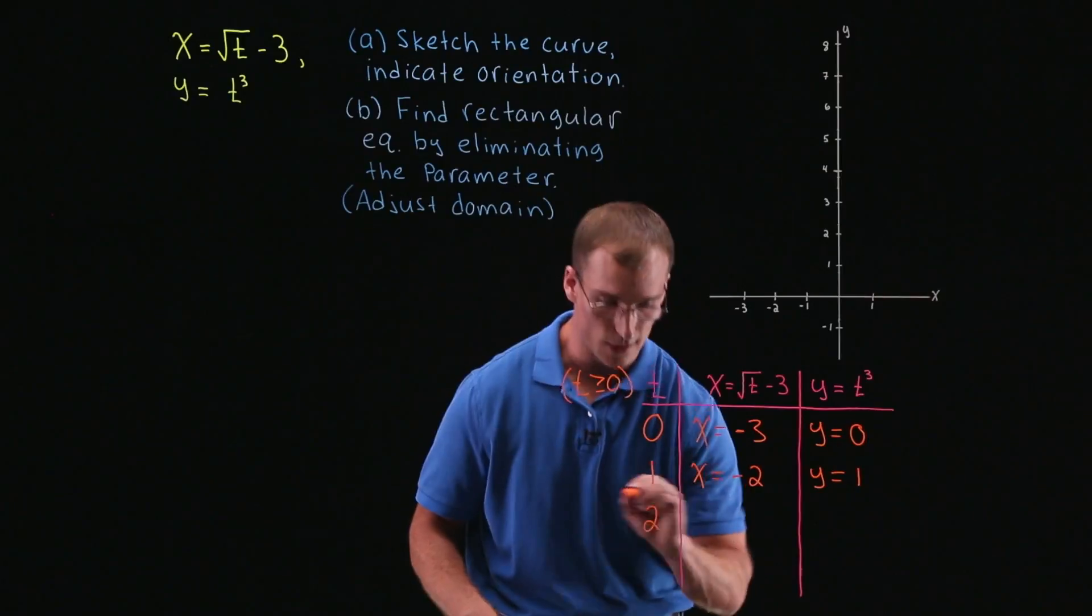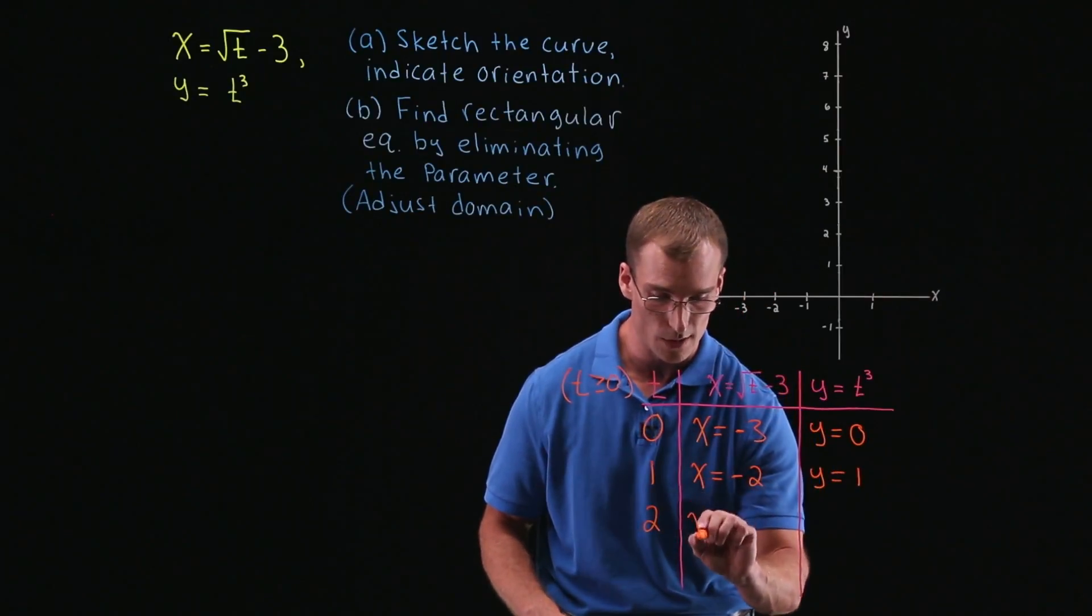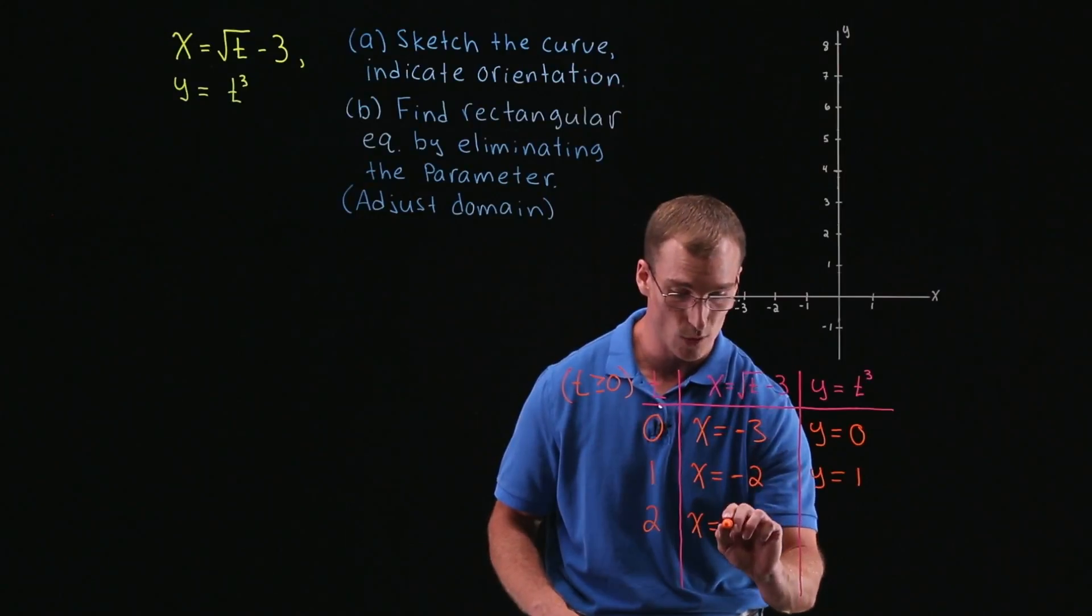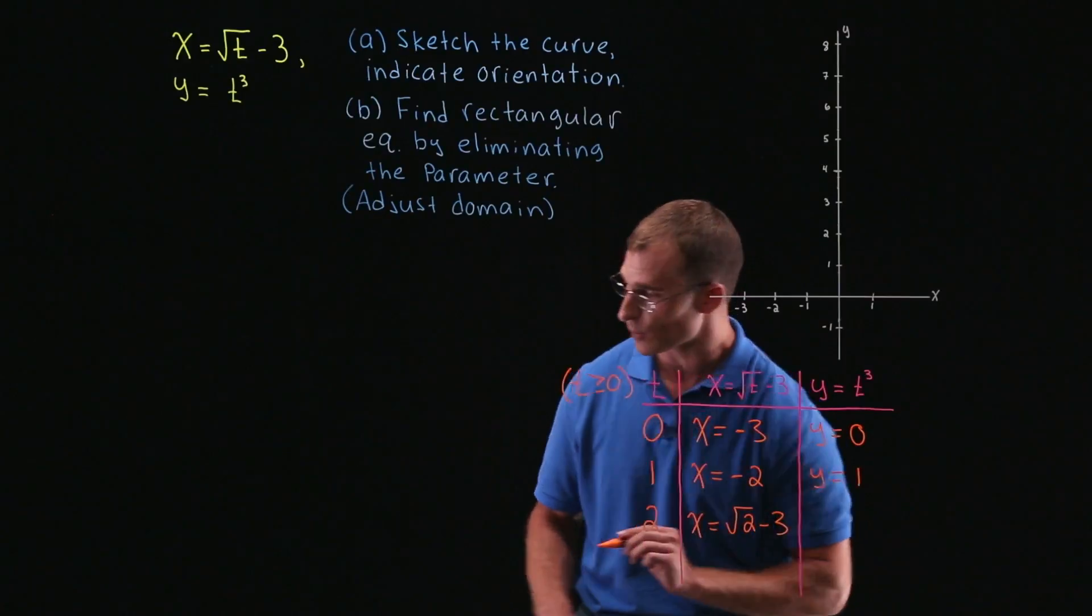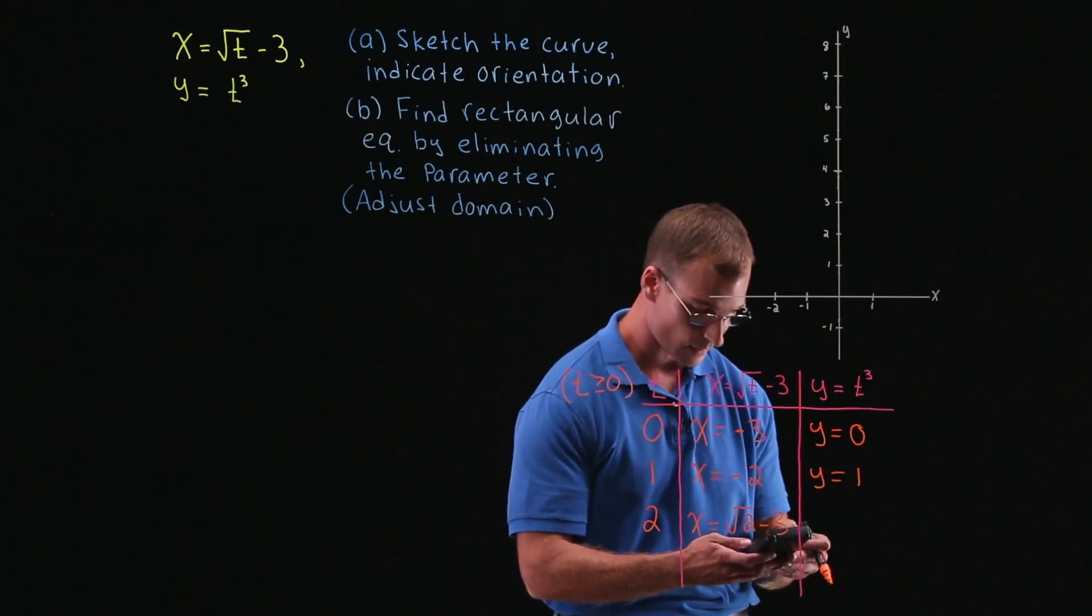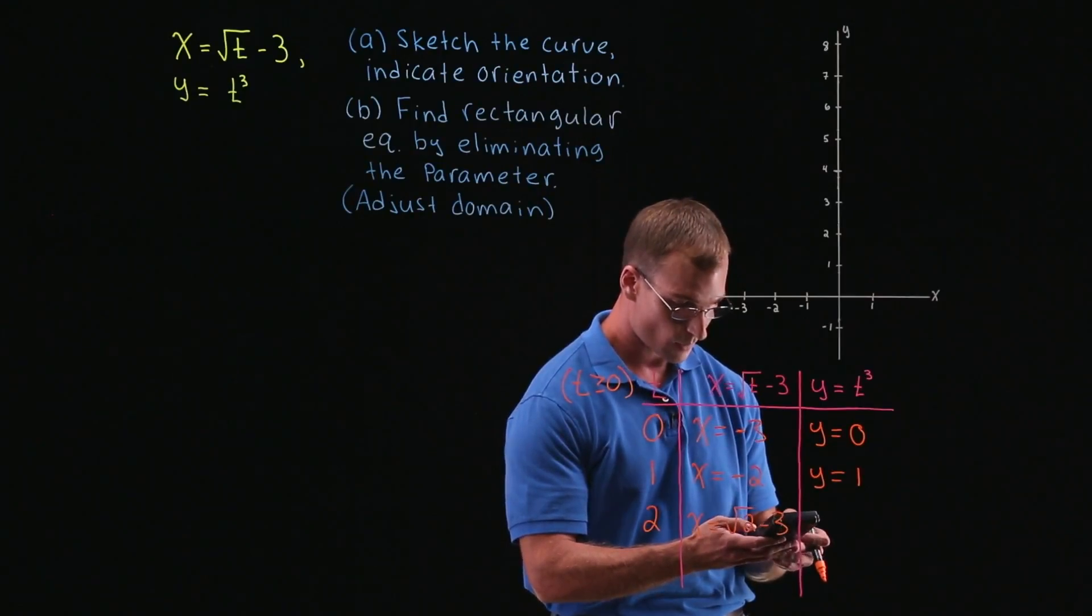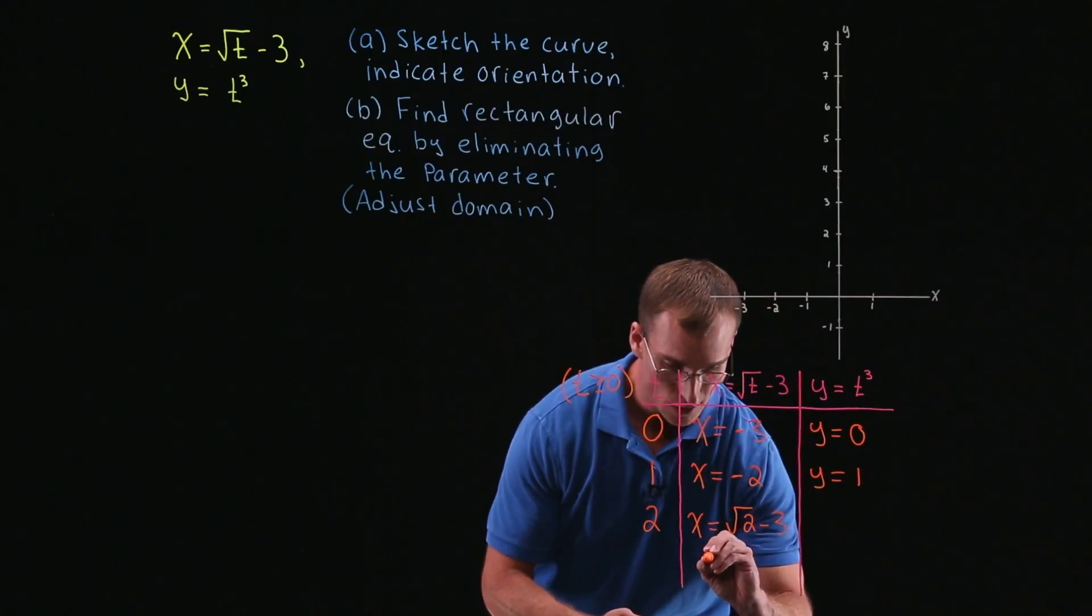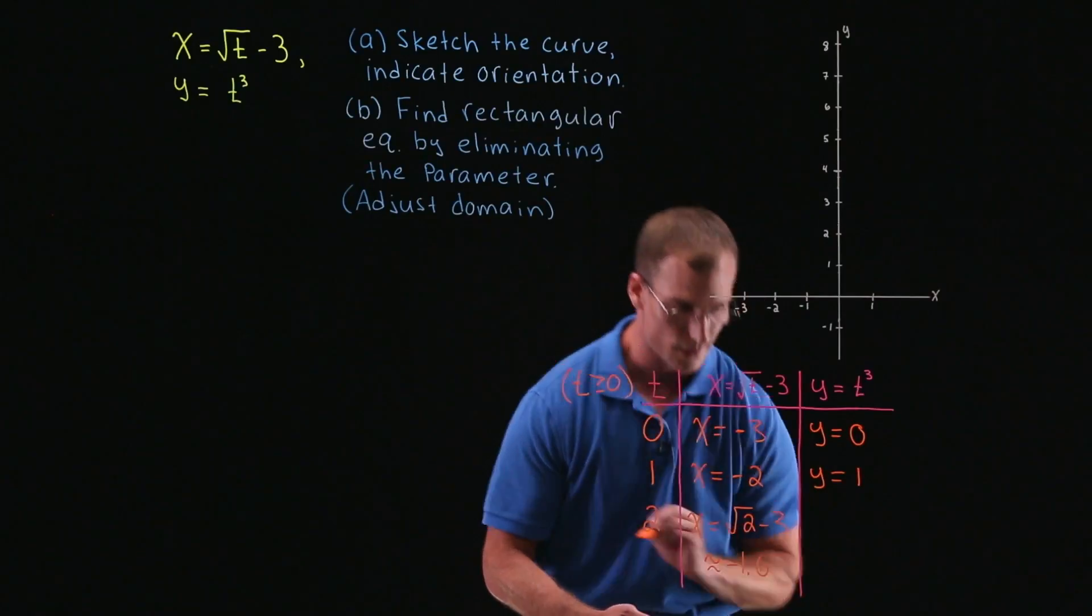And let's just go ahead and take t equal to 2 and see what we get. So here, x is going to be equal to square root of 2 minus 3. And to get a usable form for that, since we're going to try and plot this point, let's get a decimal approximation. So the square root of 2 minus 3 gives us approximately negative 1.6.